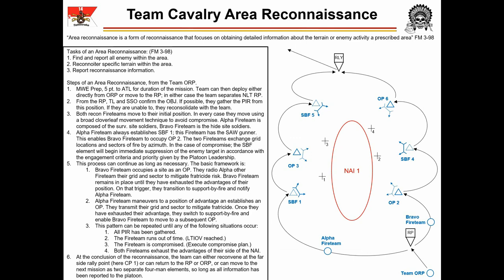The team is now prepared to depart the ORP. The team leader can choose to split the team now, or the team can move to a predetermined release point and split there. In either case, the split should occur out of sight and ideally out of hearing range of the objective. If he chooses to split at the ORP, the team leader must be extremely confident in his location and the position of the objective relative to the team. Splitting at the ORP saves time but is less precise and provides less control than utilizing a release point.